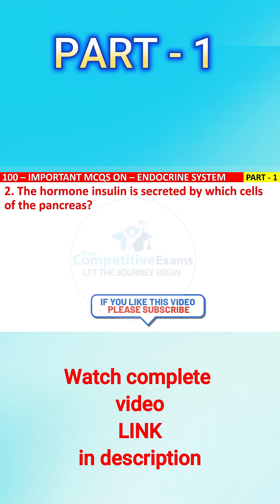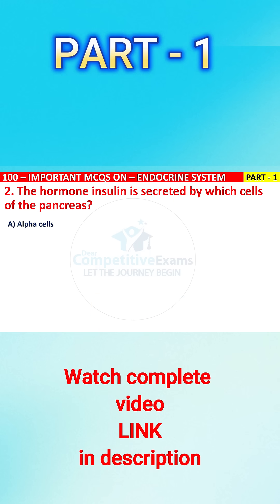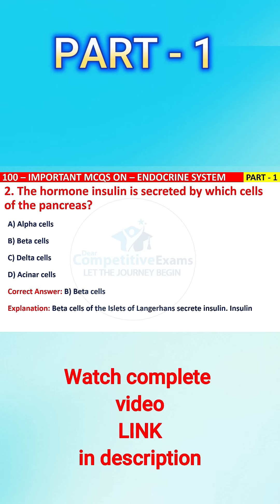Question 2. The hormone insulin is secreted by which cells of the pancreas? Your options are: alpha cells, beta cells, delta cells, or SNR cells. The correct answer is B, i.e., beta cells. The beta cells of the islets of Langerhans secrete insulin. Insulin lowers blood glucose by promoting glucose uptake into cells.